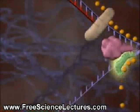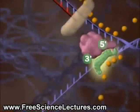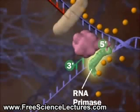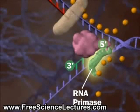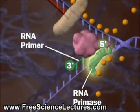Rather than DNA polymerase 3 continuously replicating the lagging strand, you've got a quite different chain of events. The first thing that happens is a new enzyme — RNA primase — gets involved. That's the third enzyme: we've got helicase, DNA polymerase, and now RNA primase. RNA primase actually creates a short strand that fits onto the lagging strand. That strand isn't DNA but RNA, and we call it a primer.